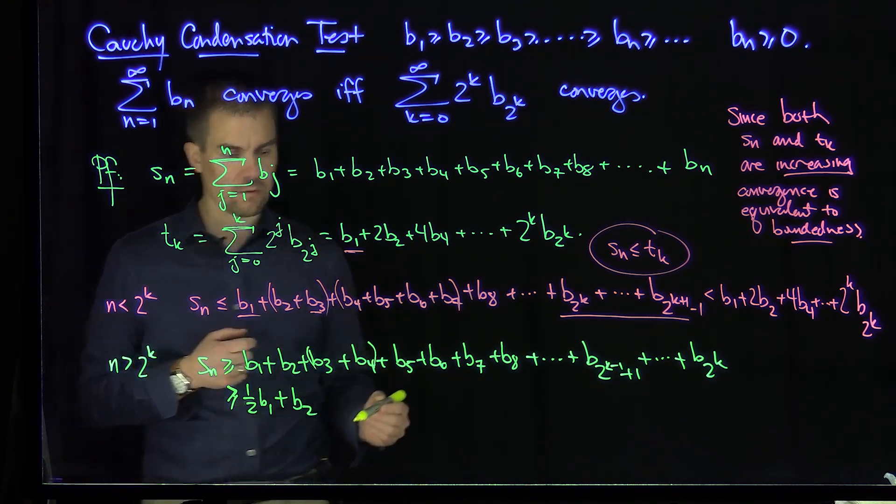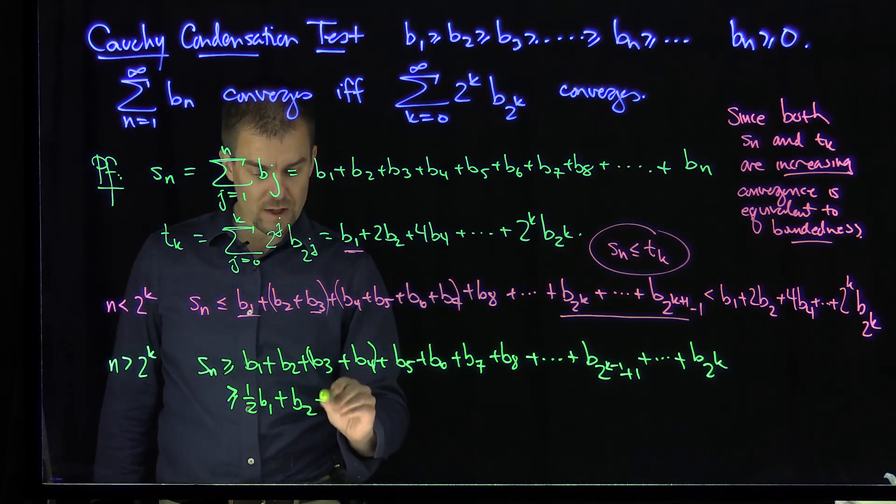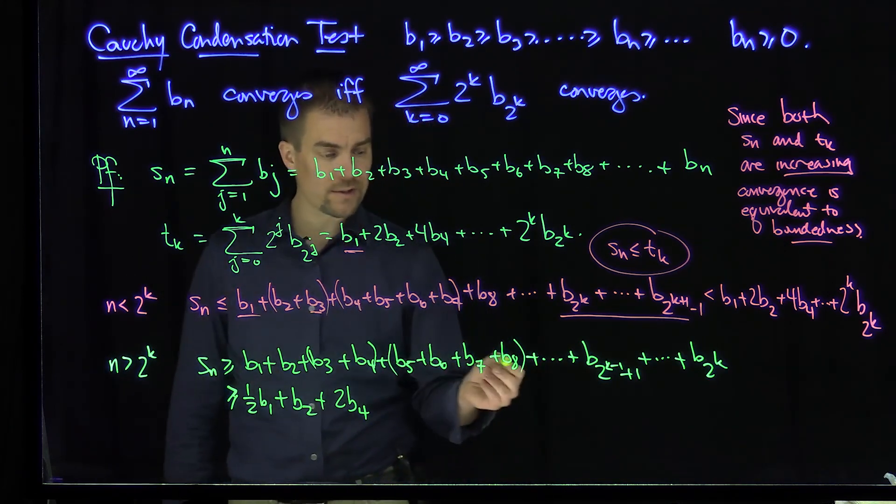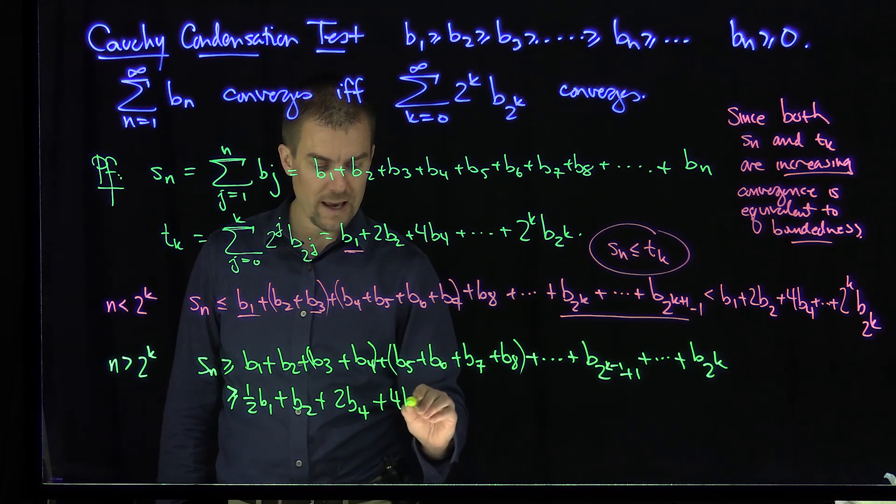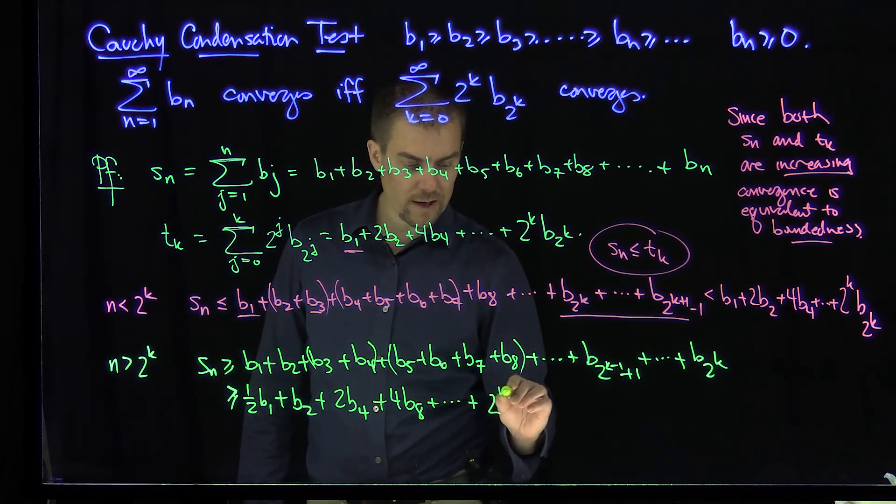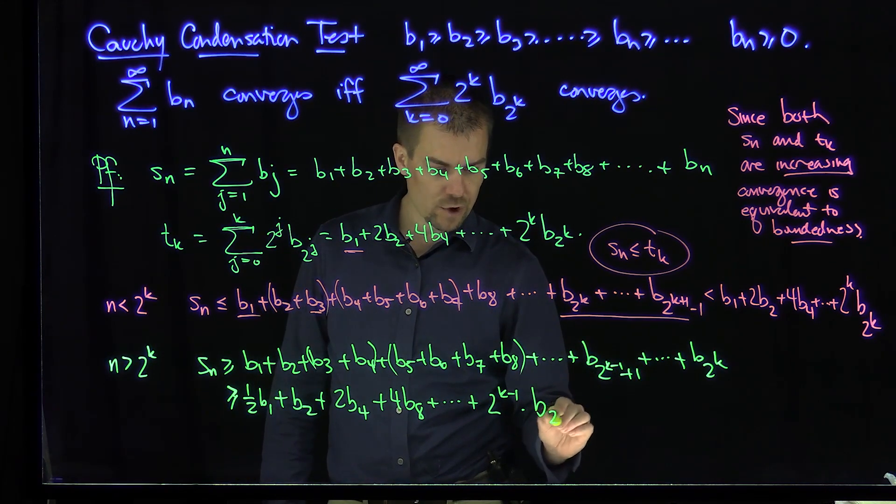Then I'll look at these next two terms and make it smaller by replacing them with B4, so I'll have 2B4. I'll look at these next four terms and replace all those with B8, making it smaller, so I'll have four B8s. And then finally, I'm going to have 2 to the power k minus 1 things over in this last chunk, and I'll replace everything with B2 to the power k.